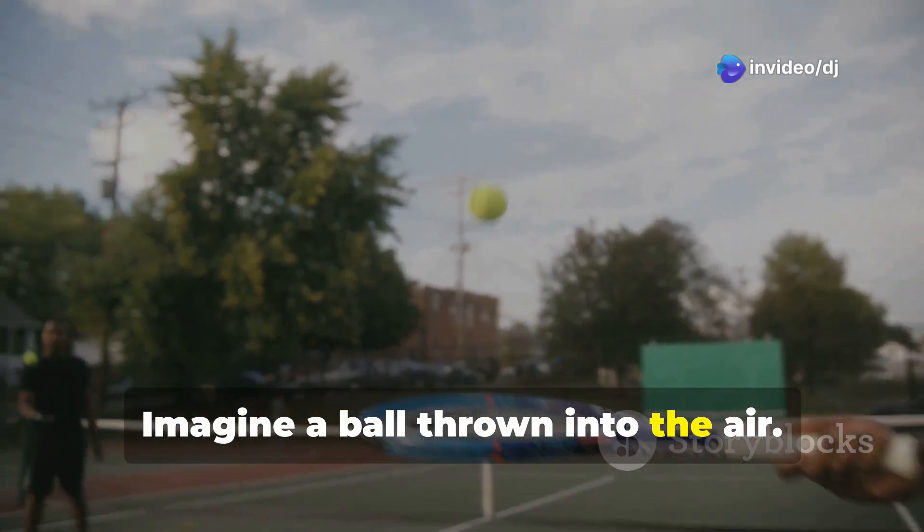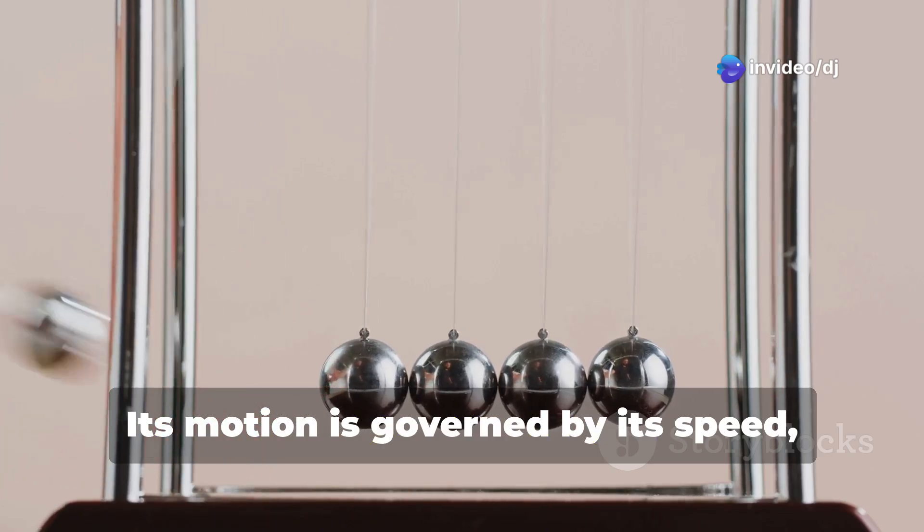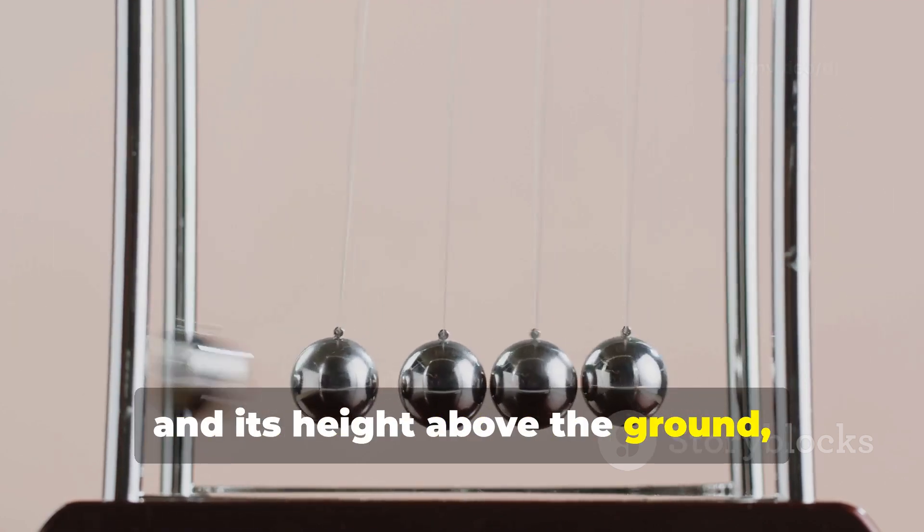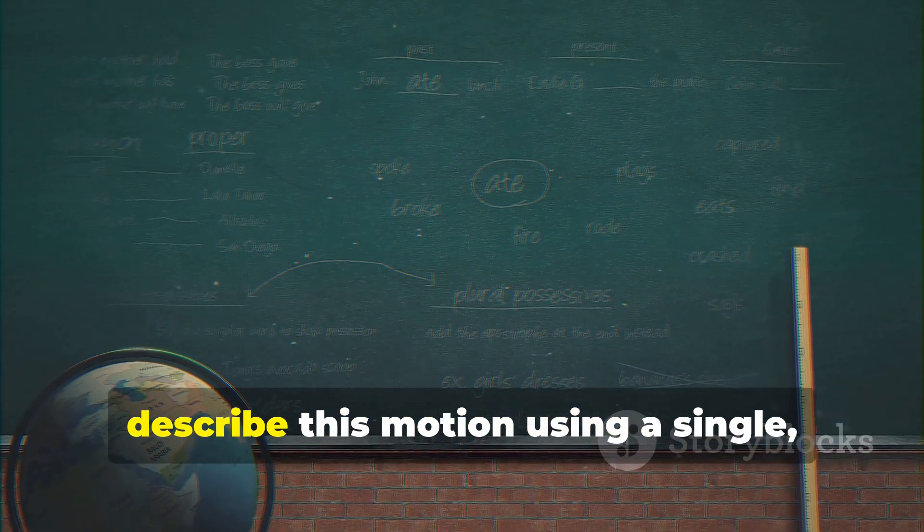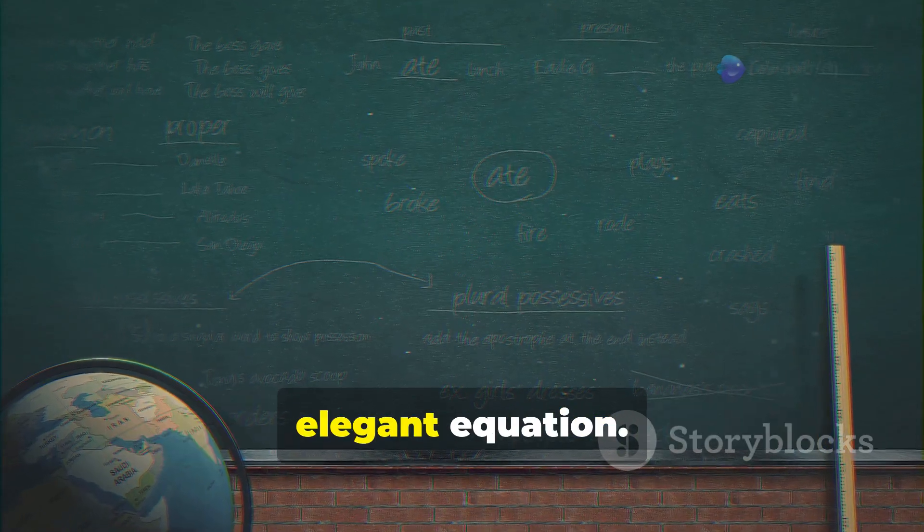Imagine a ball thrown into the air. Its motion is governed by its speed or kinetic energy, and its height above the ground or potential energy. Hamilton's principle provided a way to describe this motion using a single, elegant equation.